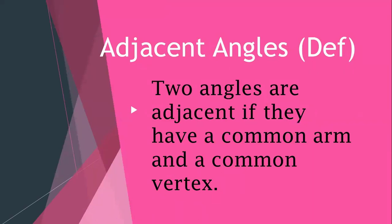Let's define what adjacent angles are. The word adjacent means side by side. Anything that is placed just beside each other is called adjacent. In terms of angles, adjacent angles are the angles that are just beside each other. It means two angles are adjacent angles if they have a common arm and a common vertex.